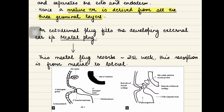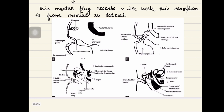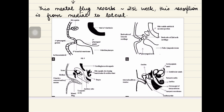Canalization of the external auditory canal starts medially and progresses laterally. This explains why in cases of canal atresia, the atresia may be localized only to the lateral part while the medial part is canalized properly. Canalization is complete at around 28 weeks of age.